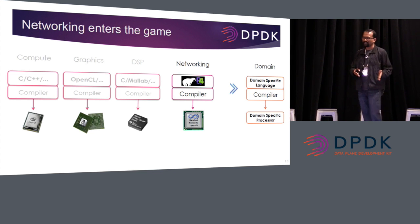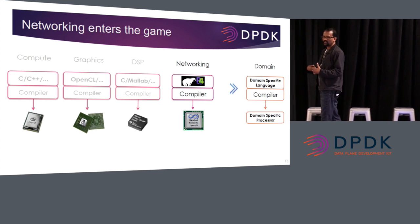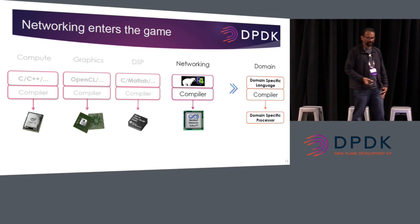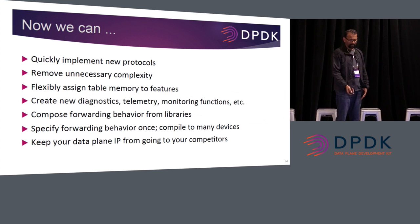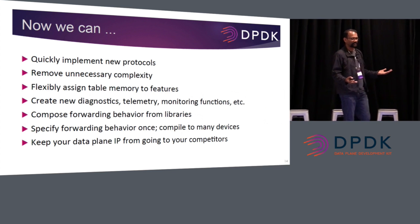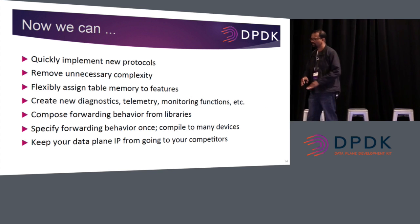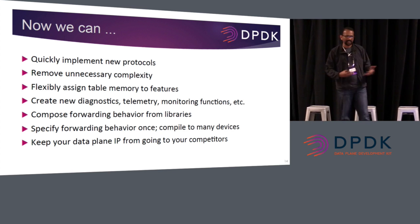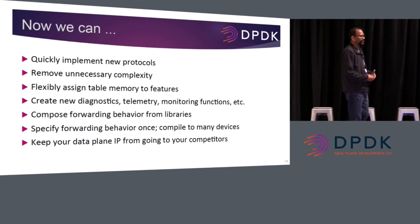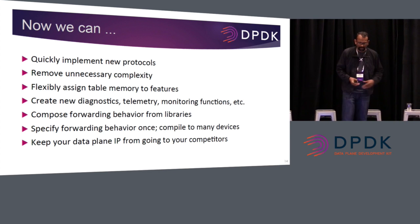We at Barefoot Networks have built a chip called Tofino. It can run at 6.5 terabits per second, has 6,500 gigabit ethernet ports on one chip, and it can do any type of packet processing you want. Typically we see these kinds of devices going into hyperscale and megascale networks.